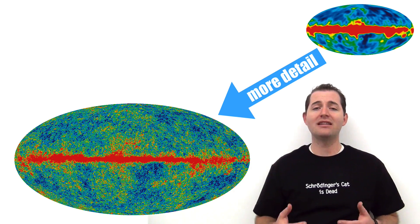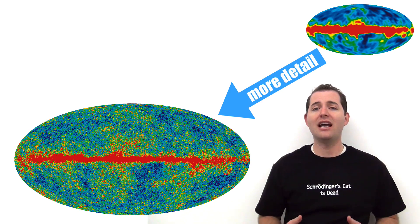As measurement tools, like those mentioned, have improved, scientists have been able to look at the CMB more closely and more precisely.